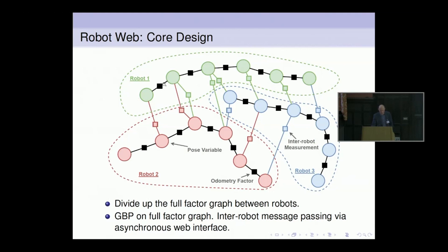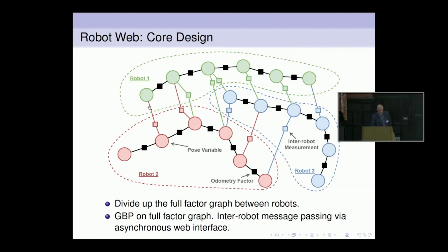We assume two types of measurements. First, odometry measurements — the black factors joining consecutive poses. The robot might have wheel odometry or an inertial sensor estimating its relative motion. Second, the robots make measurements of each other. These factors joining poses from different robots are inter-robot measurements — robot one measuring robot two, or robot two measuring robot one. We differentiate between those: red factors are measurements made by robot two, green factors are measurements made by robot one.